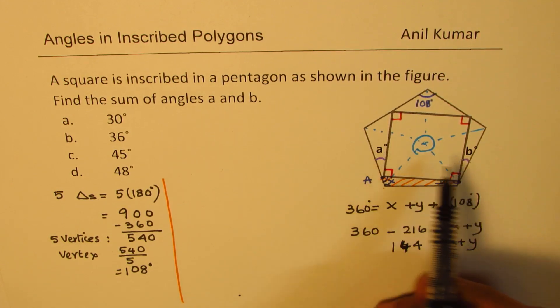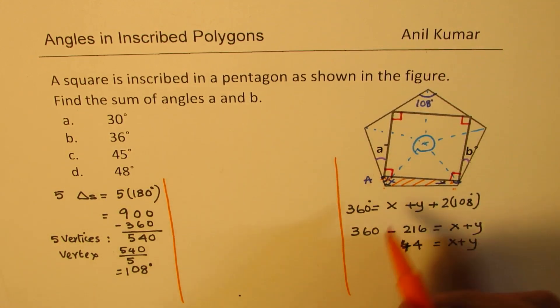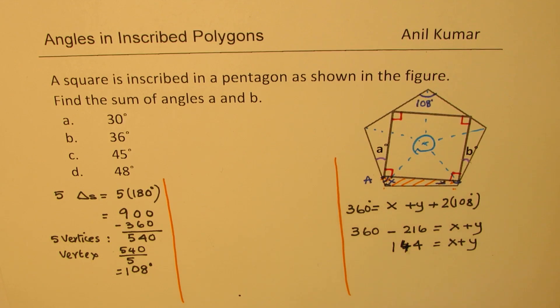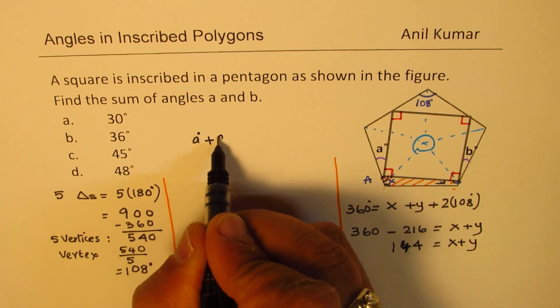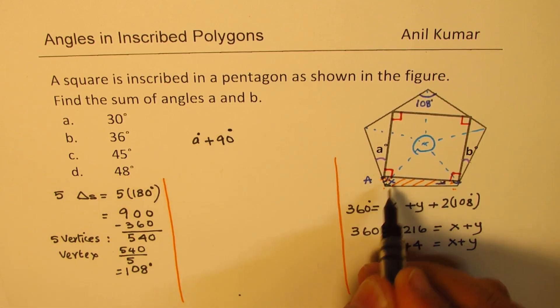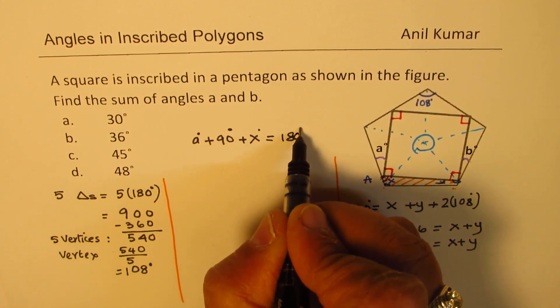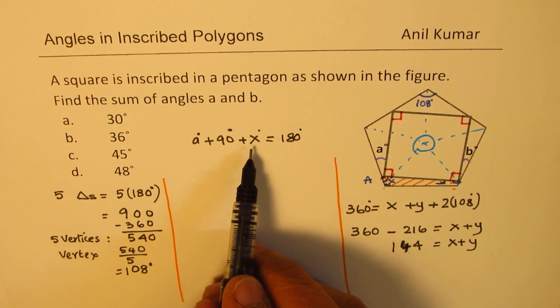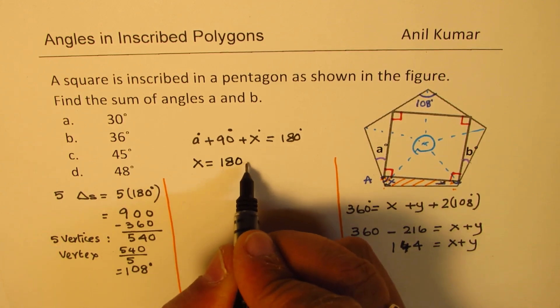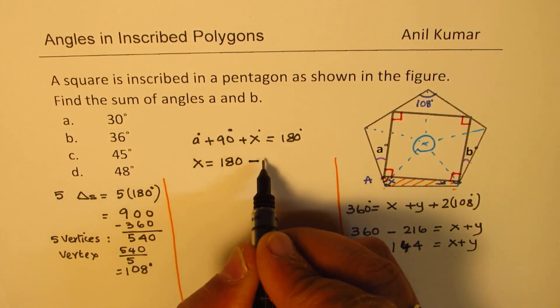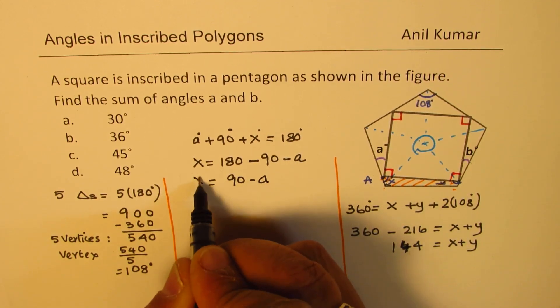We need to find sum of A and B. Now to get A and B, what we can do here is look into the point A and the straight line. The straight line forms an angle of A degrees plus 90 degrees plus X degrees. Straight line angle is 180 degrees. So from this we can get X in terms of A. So we can write X equals 180 minus 90 minus A, which equals 90 minus A.